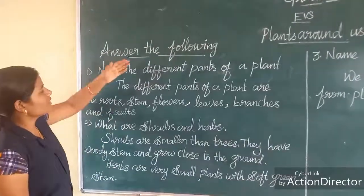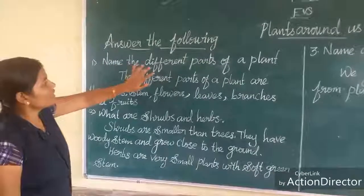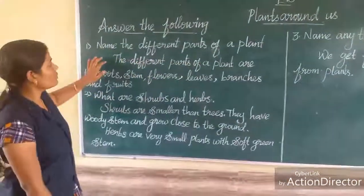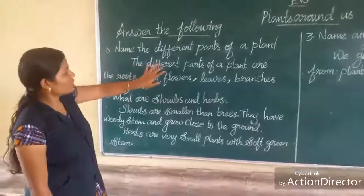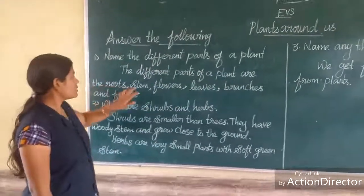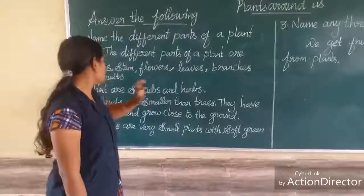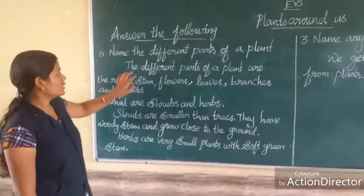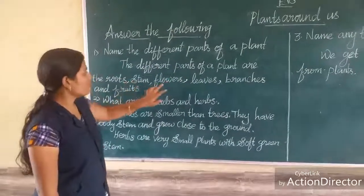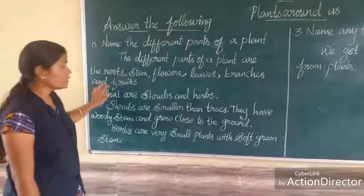Next, answer the following. First one: name the different parts of a plant. The different parts of a plant are the root, stem, flowers, leaves, branches, and fruits.